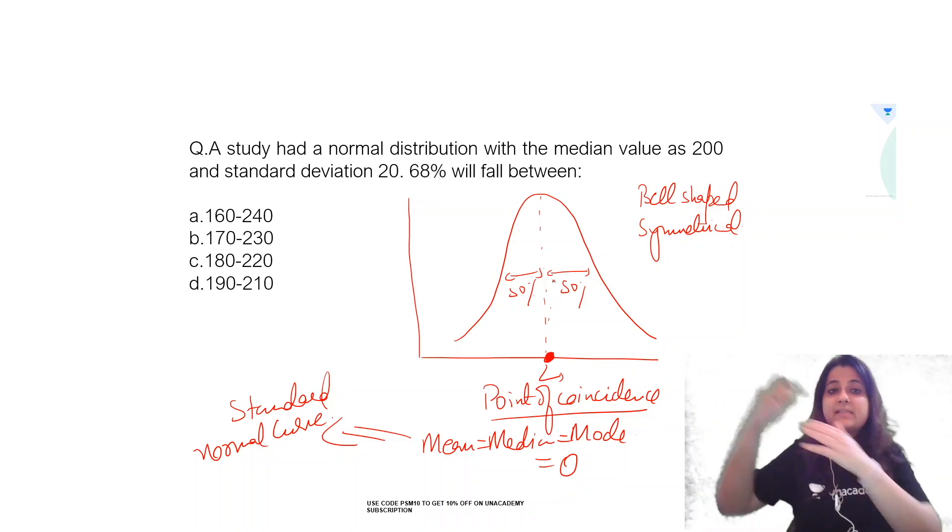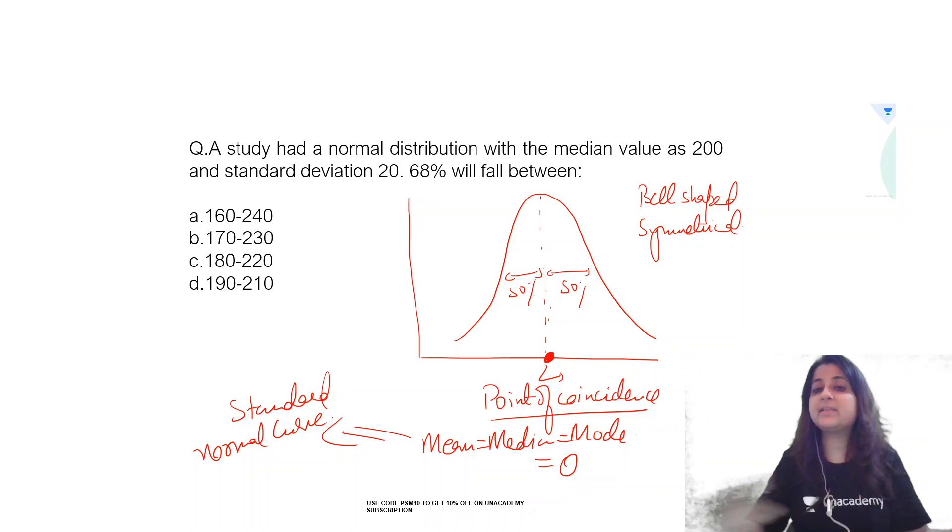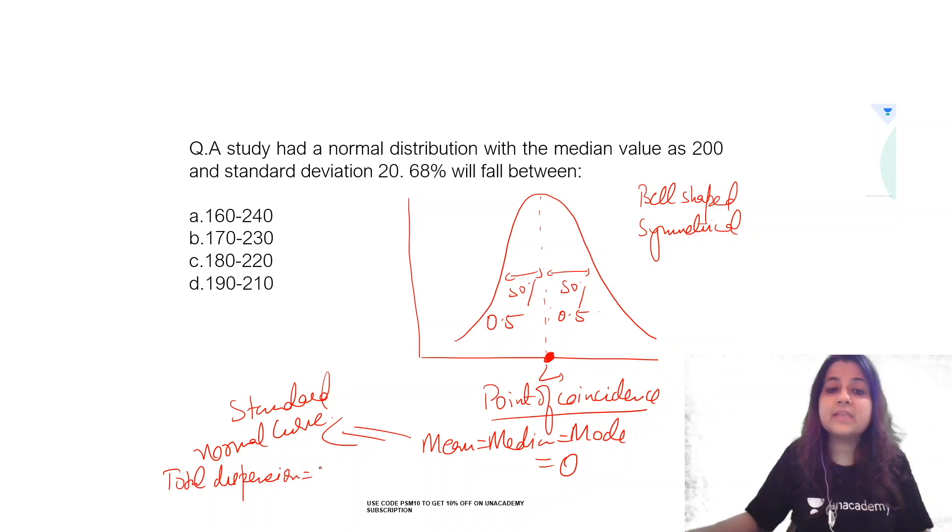And 50% observations are above and 50% below. That means 0.5 are dispersed to the right, 0.5 to the left. So total dispersion in case of a standard normal curve becomes 0.5 plus 0.5, which is 1.